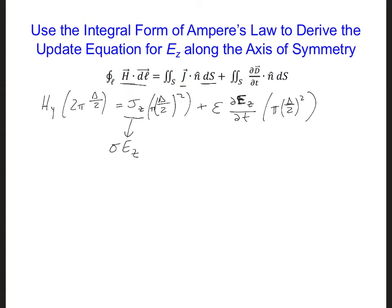So for JZ here, I'm going to write this as sigma times EZ. Then we can use central differencing again to approximate the time derivative, the partial time derivative. So it will be centered at n plus a half.